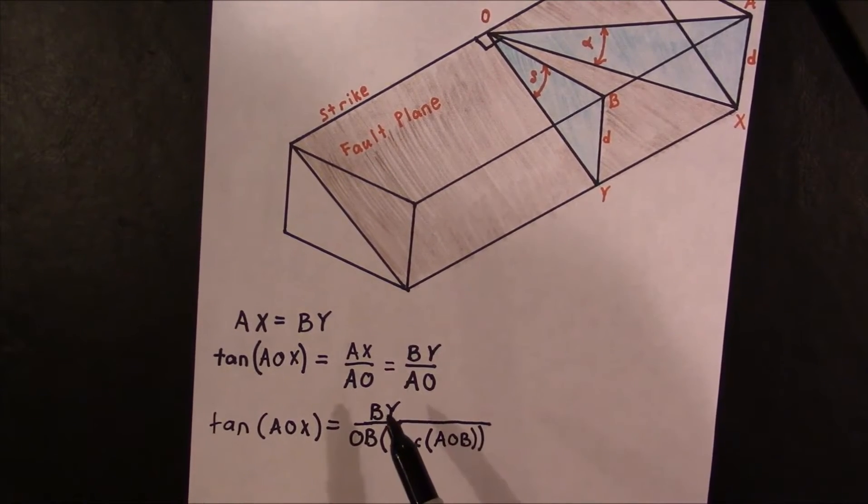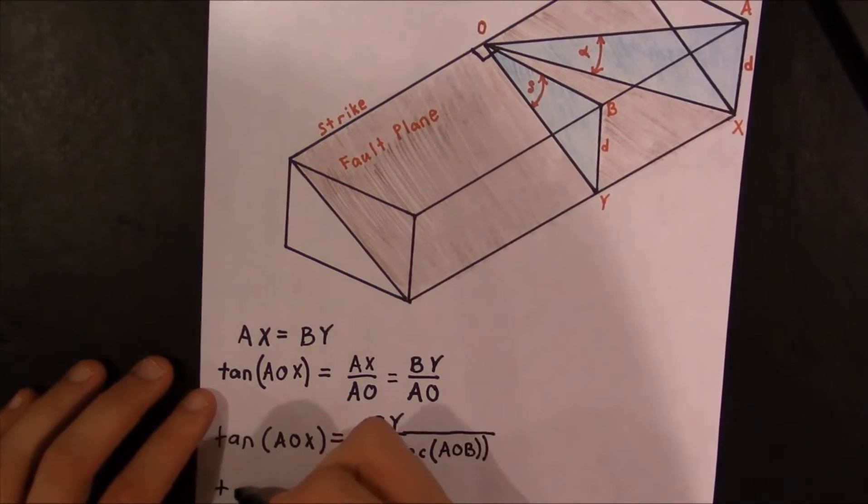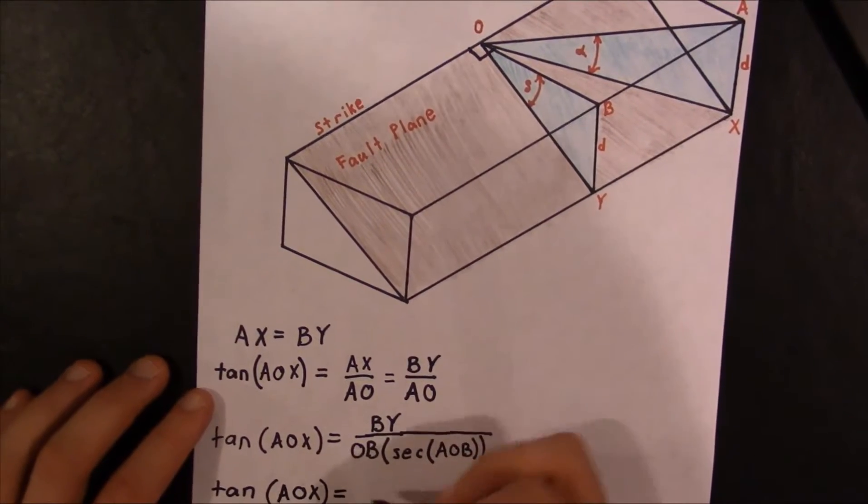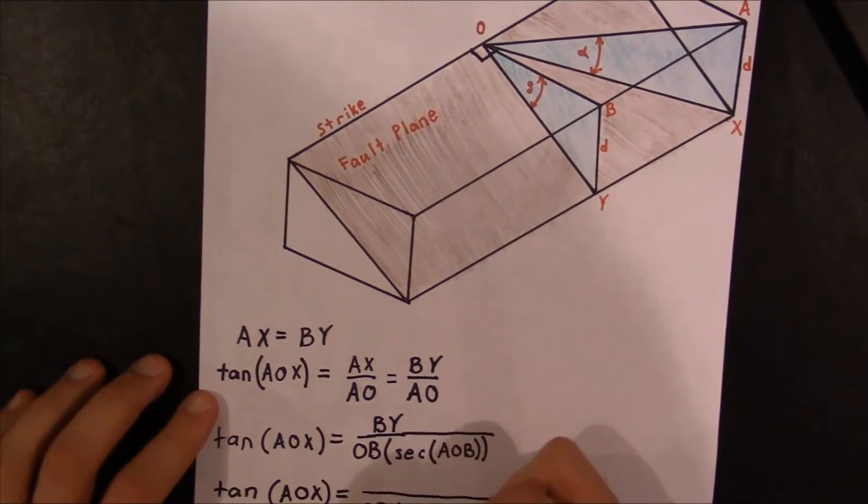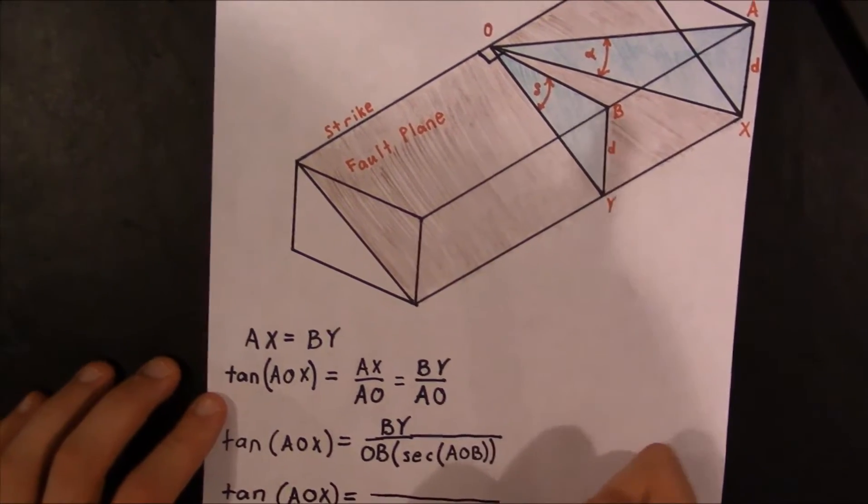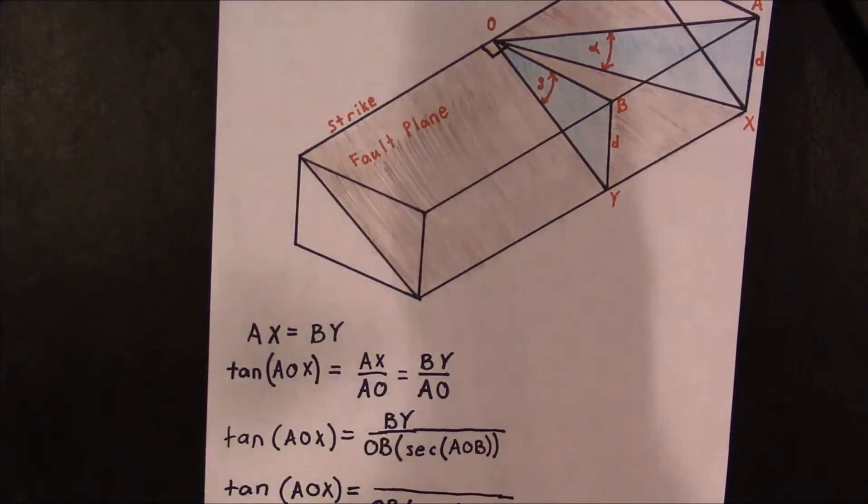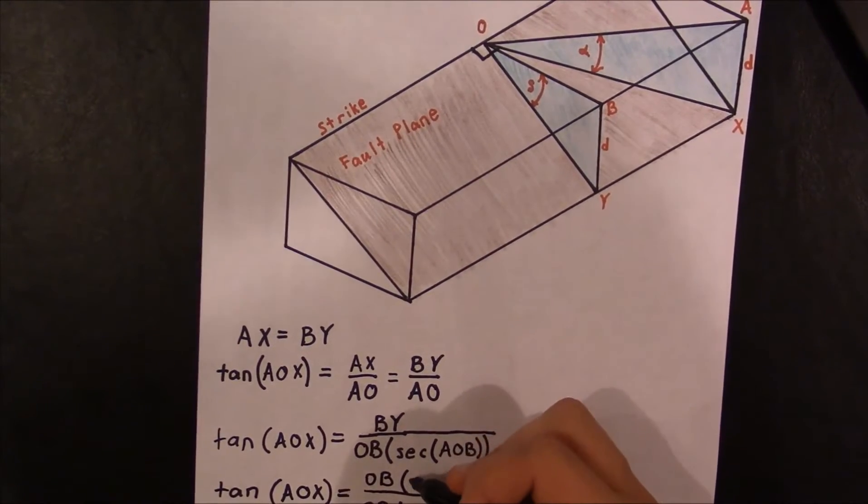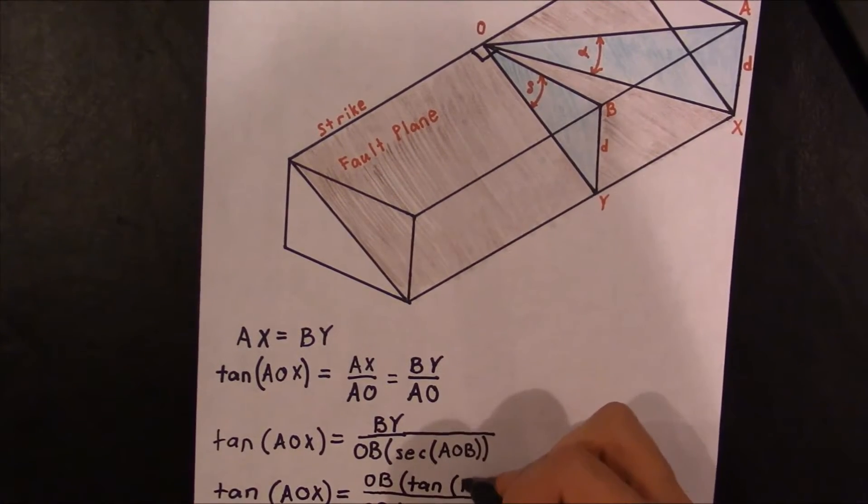The next thing we want to do is we want to substitute out BY for something. And in this case, what we can do is we can say the tangent of AOX is equal to OB secant AOB down here. And then on top, we have OB times the tangent of BOY.